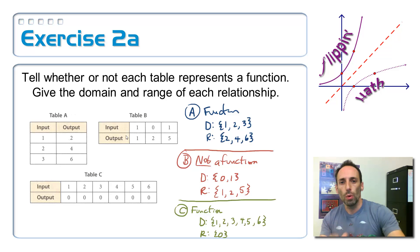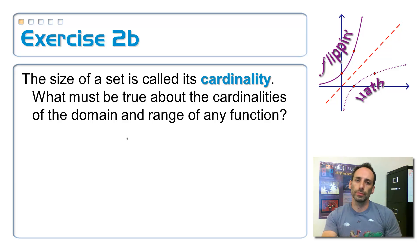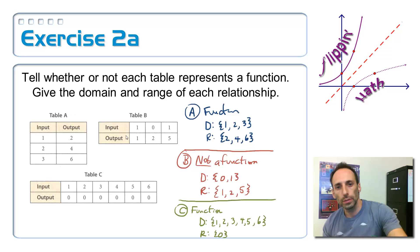Here's a follow-up question. The size of a set is called its cardinality. That just means how many things, how many elements are in the set. If I go back to the previous slide, let's look at the range on table A. There are one, two, three. Two, four, and six. There are three things in the range. Its cardinality is three. That's what we're talking about. That's all it is.